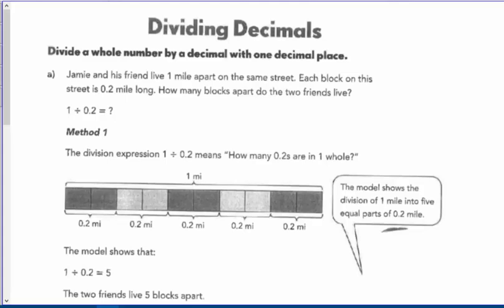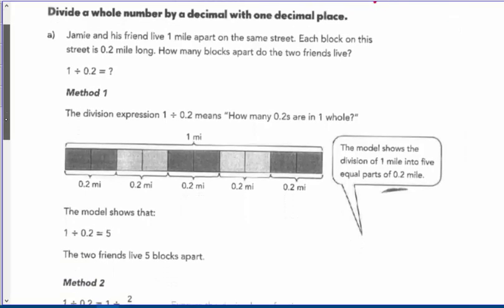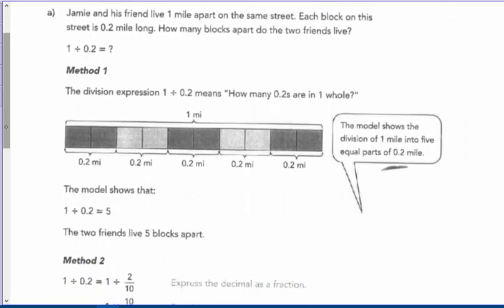On to page 23, dividing decimals. This can be found in the sixth grade text of your series if you go online to MV Math 2, chapter three, section three: divide a whole number by a decimal with one decimal place. Jamie and his friend live one mile apart on the same street; each block is two-tenths of a mile long. How many blocks apart do the two friends live?